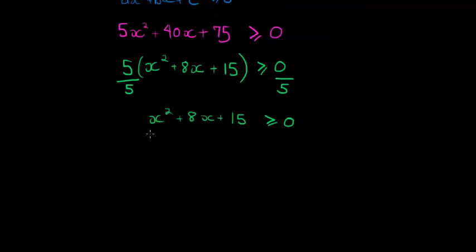Now I factorize it into two lovely brackets, greater or equal to zero: (x + 5)(x + 3), because 5 plus 3 is 8, and 5 times 3 is 15, both positive. And yes, that's fairly okay.